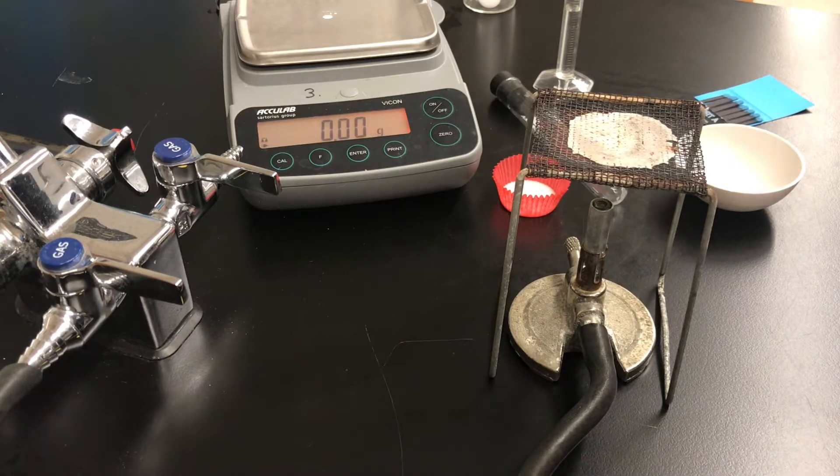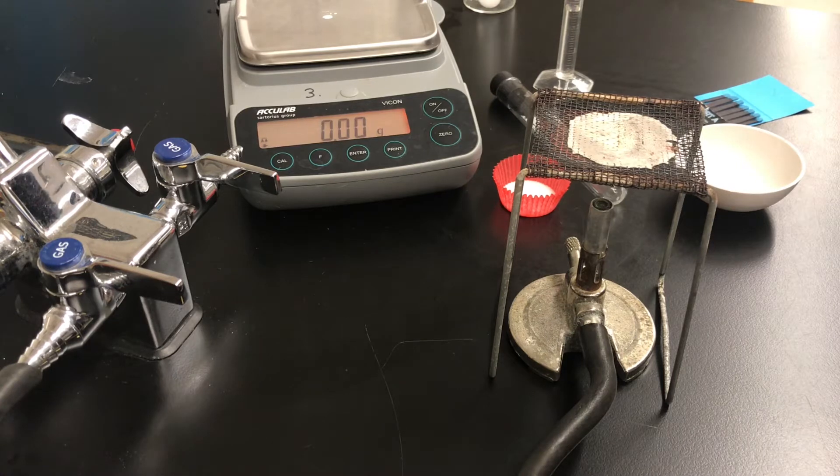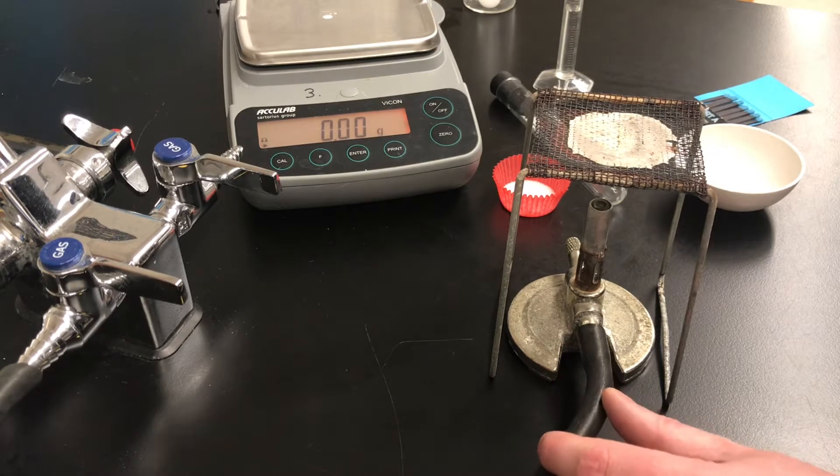In this video we're going to take a look at the experiment called concentration of a saturated solution for grade 9 advanced science. This is in your science booklets in unit 3 on solubility.